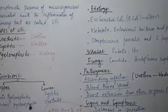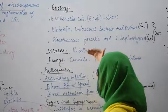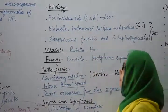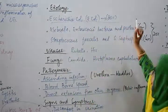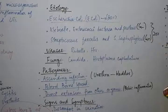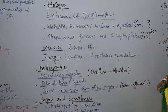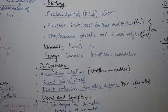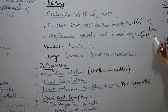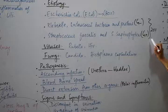Regarding etiology, UTI can be caused by bacteria, viruses, and fungi. The most common bacterial cause is E. coli, accounting for 80% of cases, commonly from the anus entering the urethra. The remaining 20% includes other bacteria such as Klebsiella, Enterococcus, and Proteus — these are gram-negative bacteria. Gram-positive bacteria include Streptococcus saprophyticus and Streptococcus faecalis, which can also cause infection in the urethra.